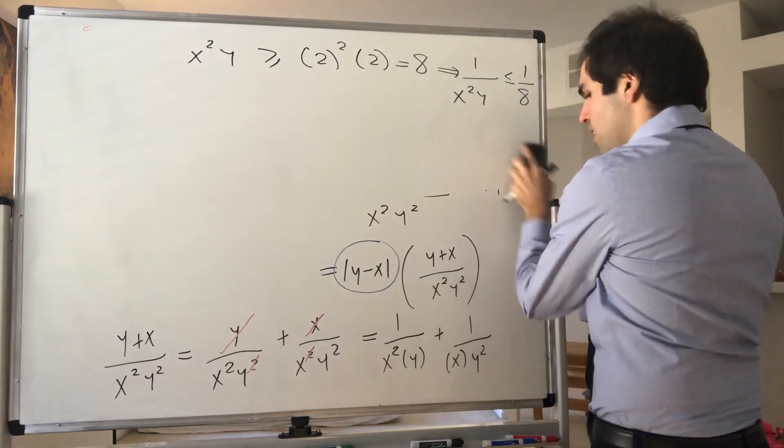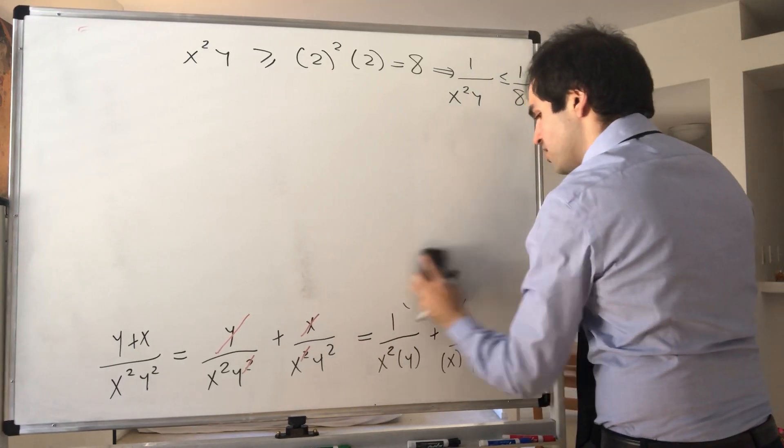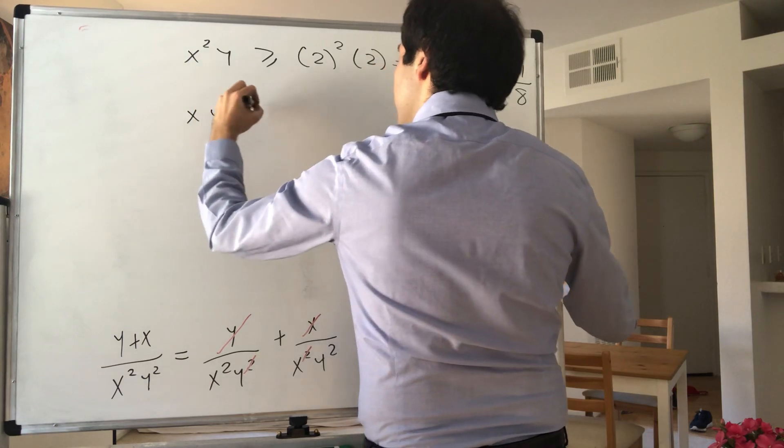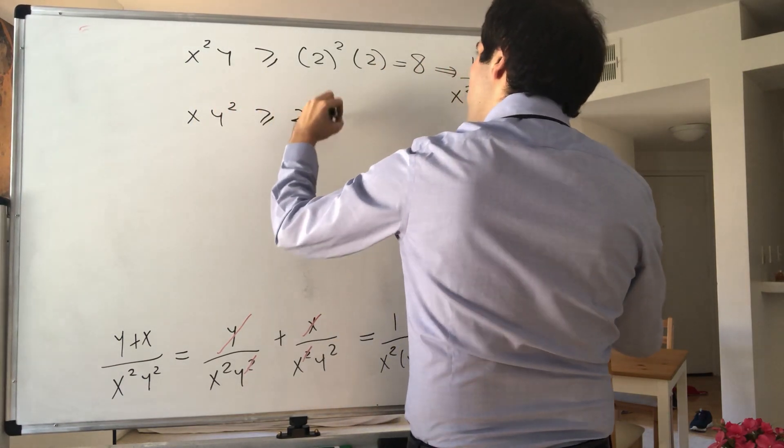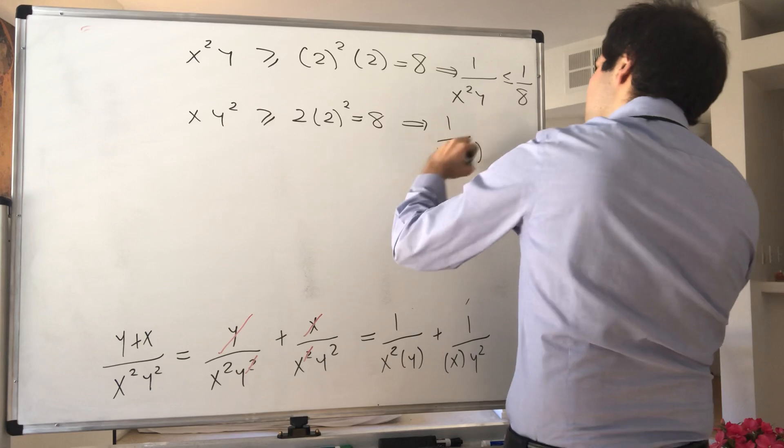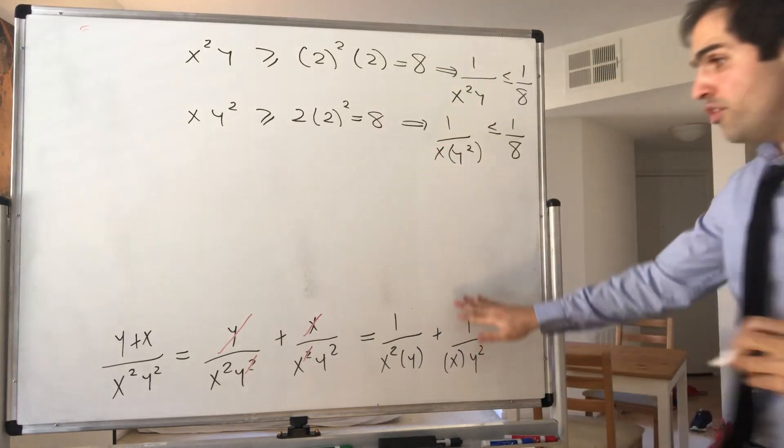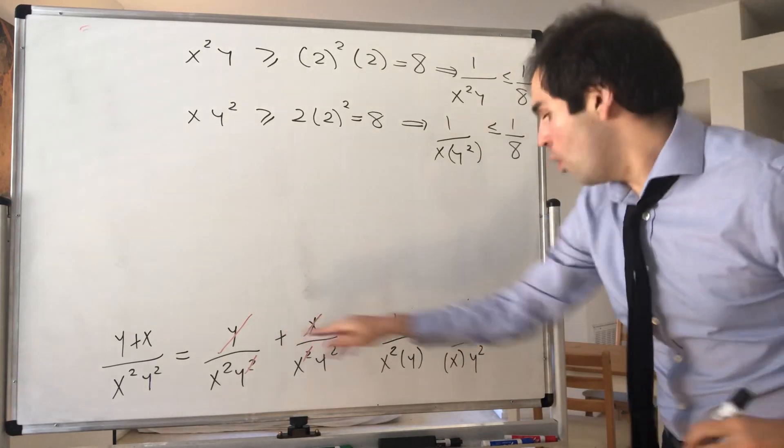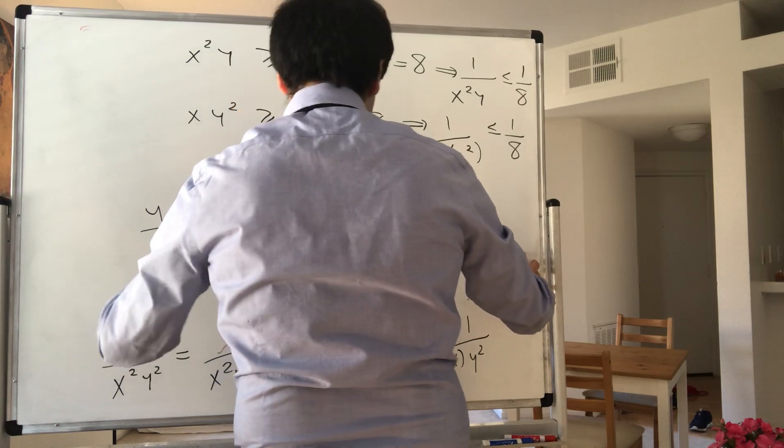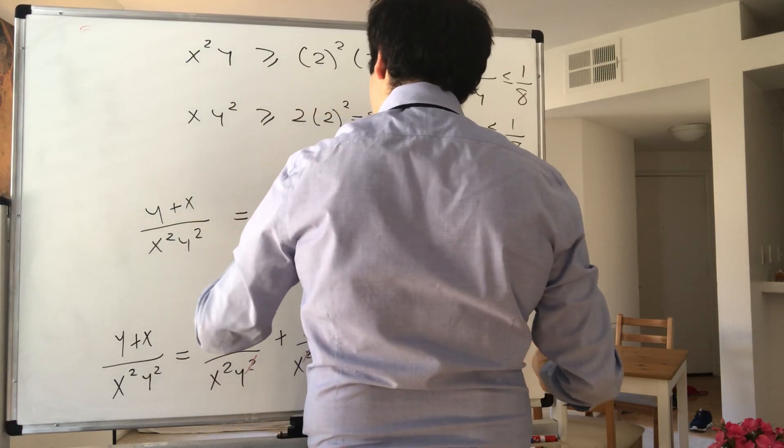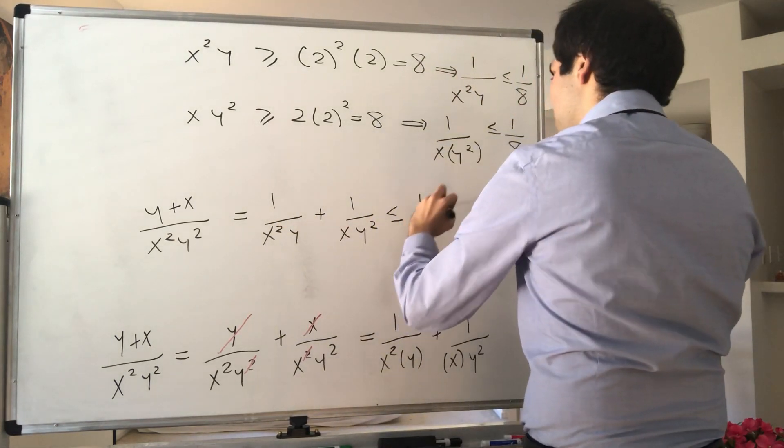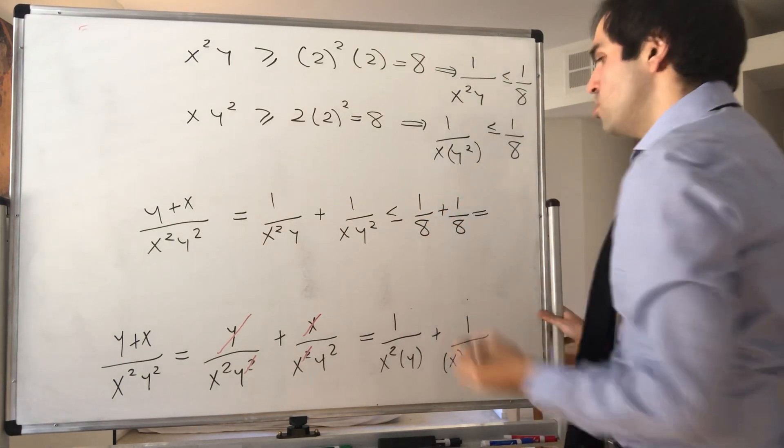On the other hand, the exact same thing with 1 over x times y squared. So in particular, x times y squared is also greater or equal to 2 times 2 squared, which is 8. Therefore, 1 over x times y squared is less than or equal to 1 eighth. So if you add them up, then you get this whole term. So y plus x over x squared y squared becomes less than or equal to 1 eighth plus 1 eighth, and that just becomes 1 fourth.